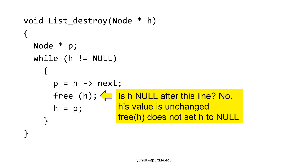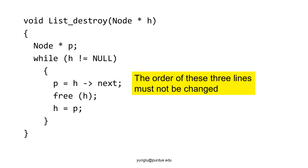After free h, what is the value of h? h's value is unchanged — it still stores the address of the node that has already been deleted. Please notice that free h does not set h's value to null. Another question is whether we can change the order of these three lines. The answer is no. If we move free h first, then h arrow next does not exist and the program will have a segmentation fault.